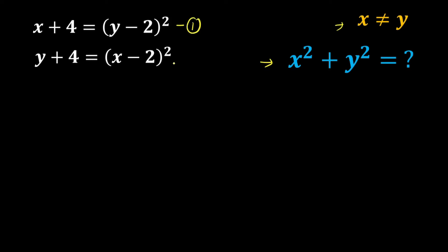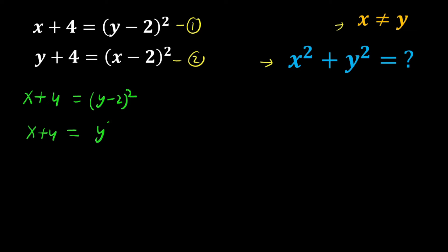Let us consider the first equation: x plus 4 equals (y minus 2) squared. Expanding the right-hand side: x plus 4 equals y squared plus 4 minus 4y. The 4s cancel out, giving us x equals y squared minus 4y.